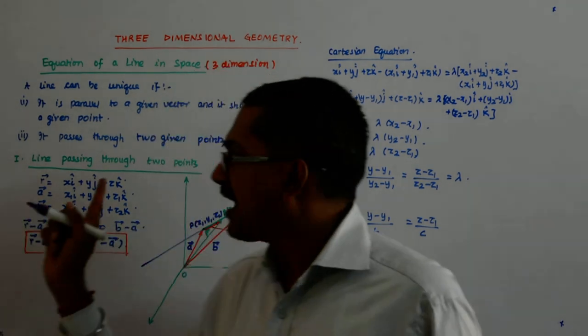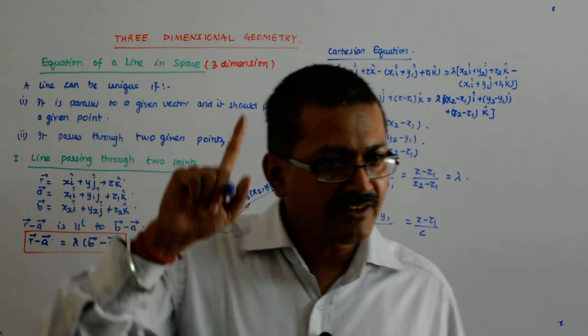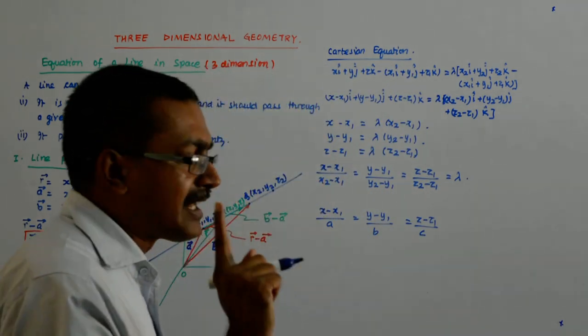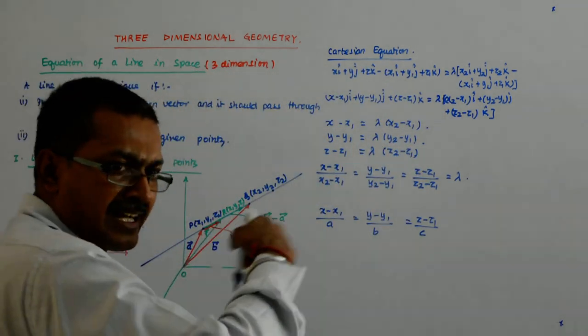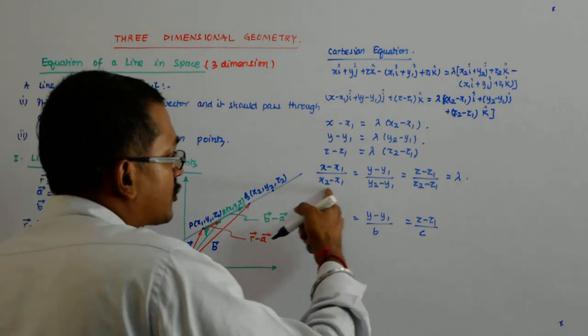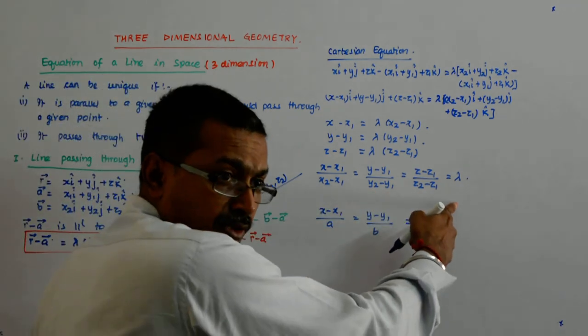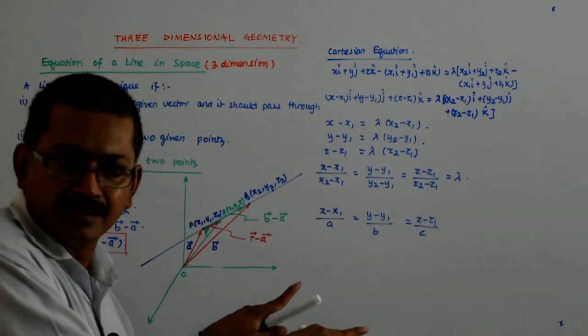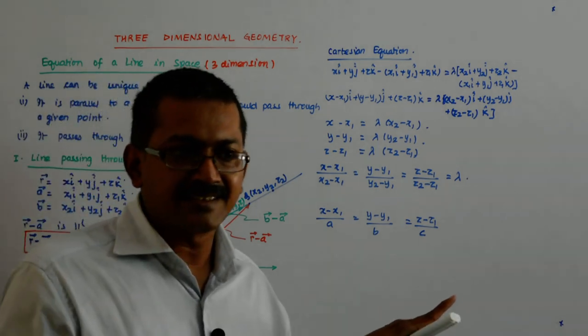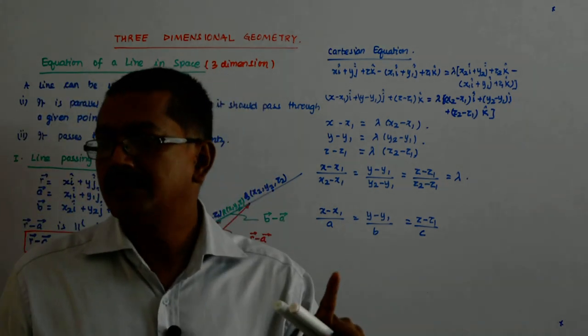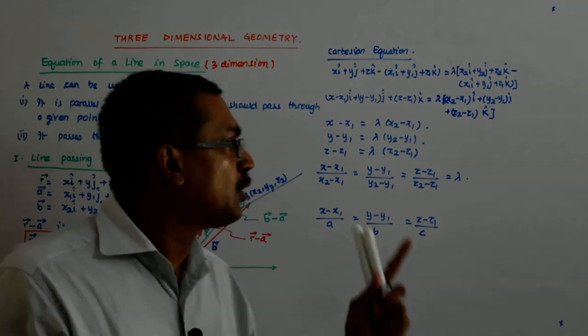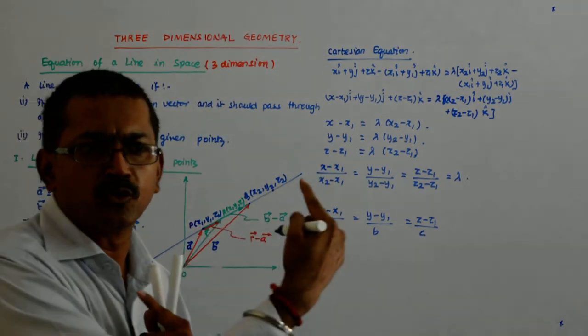In this case, since it was parallel to a given vector, my direction ratios were known, a, b, c. Here, it is passing through these two points and we already know that the direction ratio of a line that joins two points is x2 minus x1, y2 minus y1, z2 minus z1. So, aren't they identical? In one of the cases, you were given the direction ratios. In this, you have found out the direction ratio from two given points.